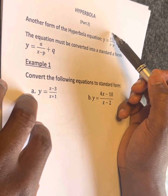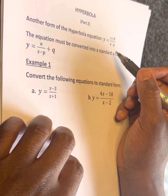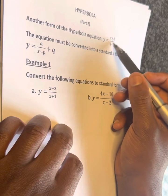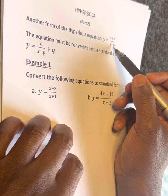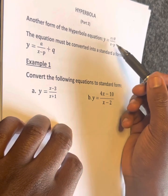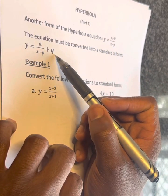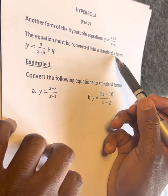The formula of hyperbola, or rather the equation of hyperbola, is a single fraction. We can convert it into a standard form. Hence, the equation must be converted into a standard form.